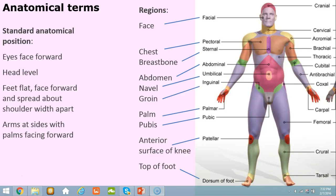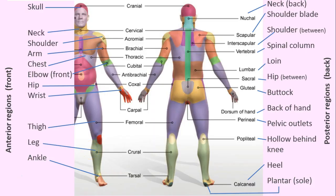Some of the regions in English: face, chest, breast bone, abdomen, navel, groin, palms, pubis, anterior surface of the knee, and top of the foot. We want an international language so people in China, Japan, Russia, and Indonesia can all understand us, so we use Latinized words: facial, pectoral, sternal, abdominal, umbilical, inguinal, palmar, pubic, patellar, and dorsum.